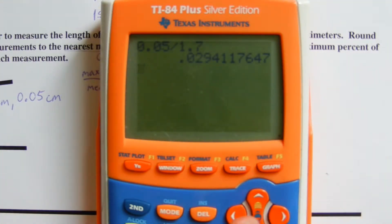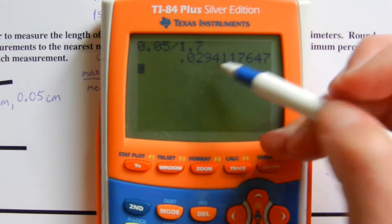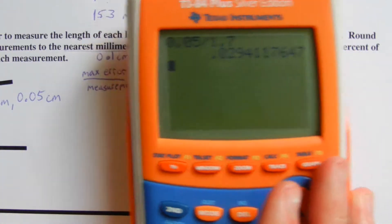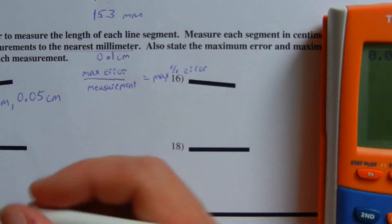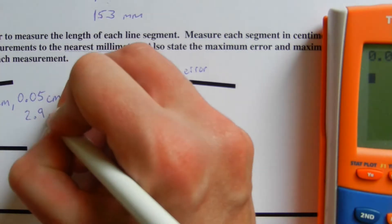However, when we convert that to a percent, we'll get 2.9% since we need to move the decimal place over twice to the right. So for number 15, our maximum percent of error is 2.9%.